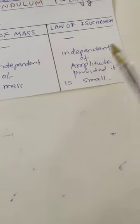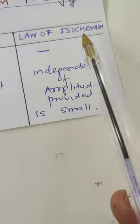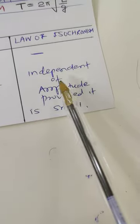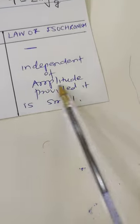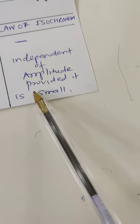Very simple. And the fourth is law of isochronism. Period of simple pendulum is independent of amplitude, provided it is small. That means provided amplitude is small.